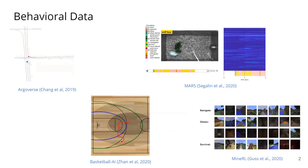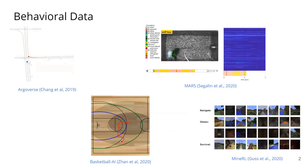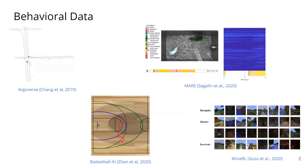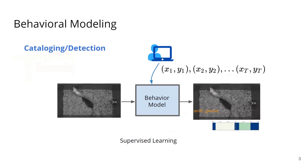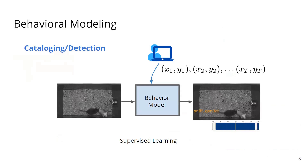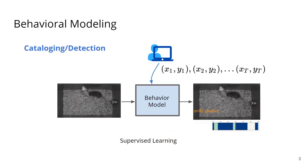Large amounts of behavioral data are reported in many domains, from autonomous vehicles to sports analytics to biology and to video games. A common behavior modeling task across these domains is behavior cataloging or detection. Domain experts will often want to train models that can automatically annotate predefined behaviors at each point in time.